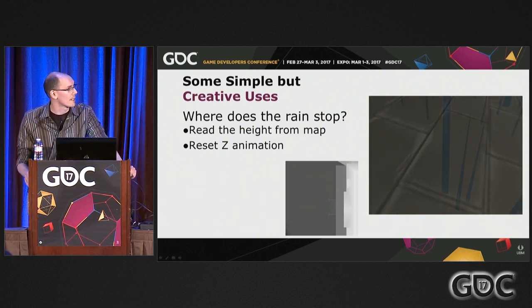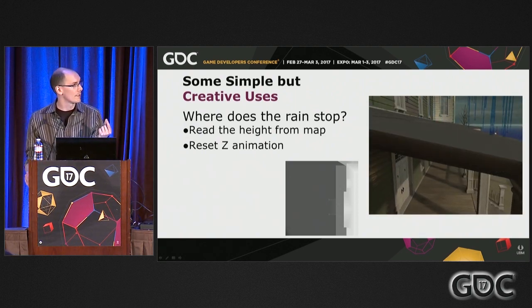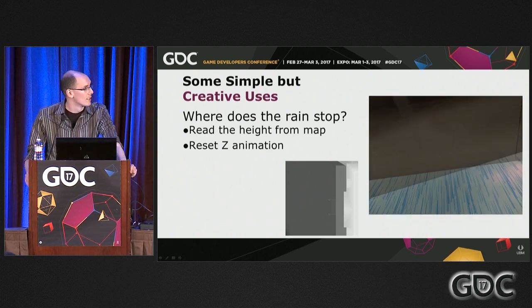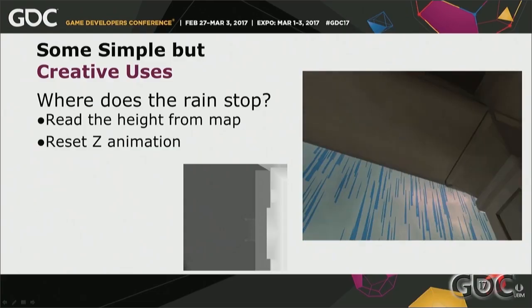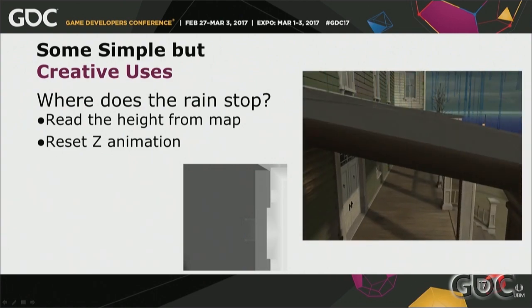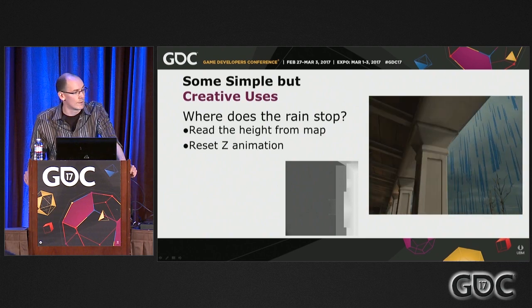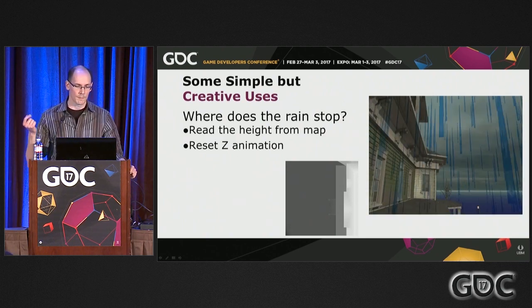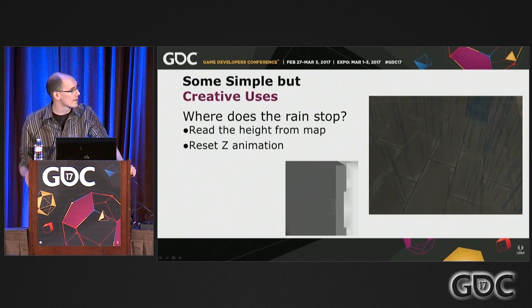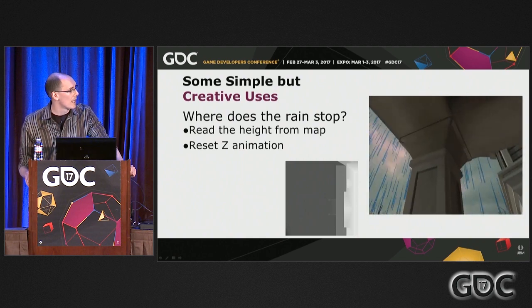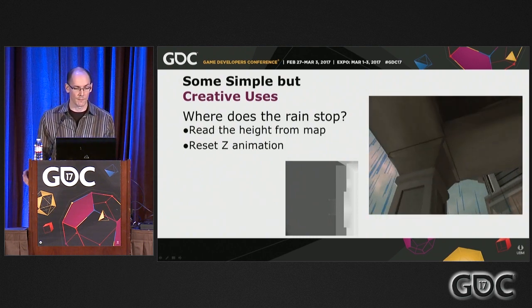Here's an example where we have rain animated by Vertex Shader. We are moving the vertices depending on the pivot point of each drop in the Z axis, so from top to bottom they are animated. But how do we know where to stop the drop? In this example we have a port, and we don't want the drops to go beneath it. So what we do is map the drops into a texture, read the height of each drop, and we know when to reset the position of the drop and teleport it back to the top.